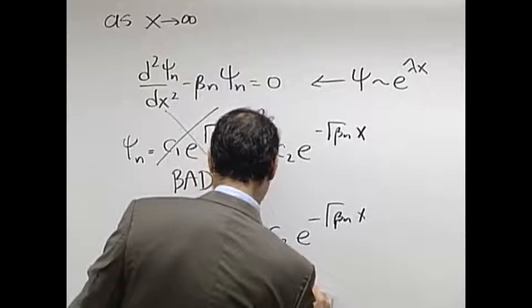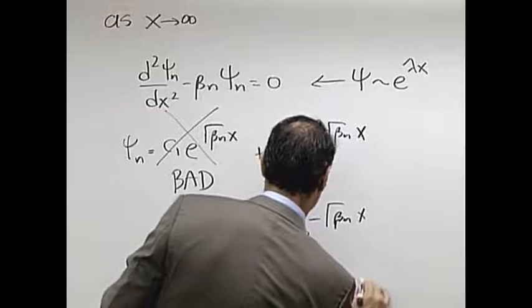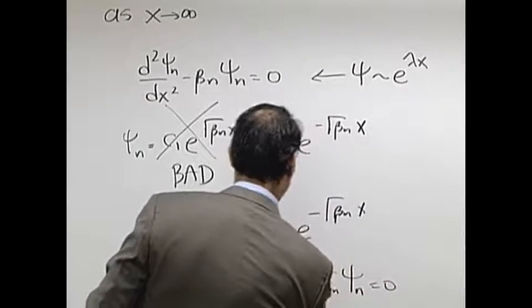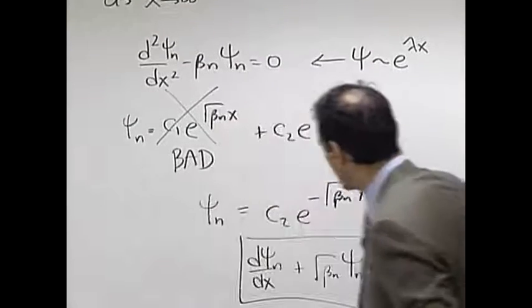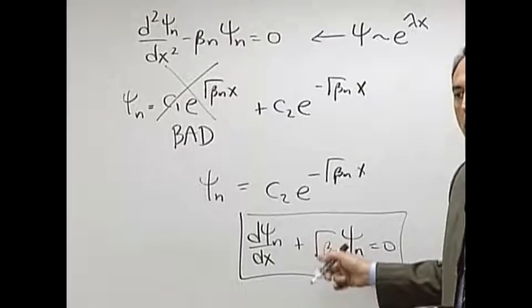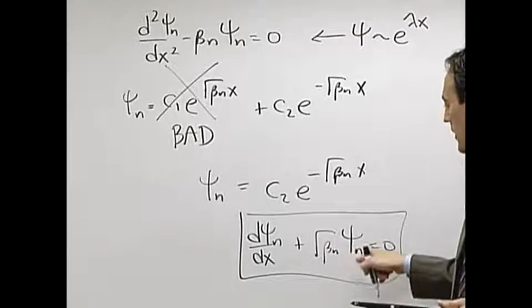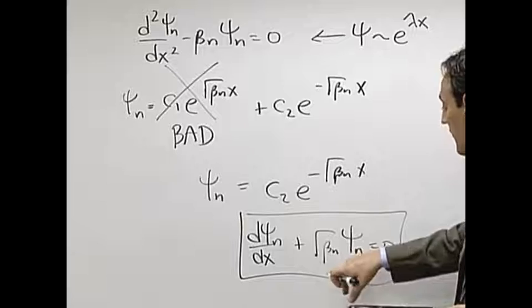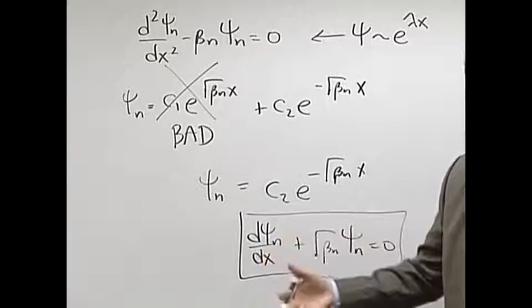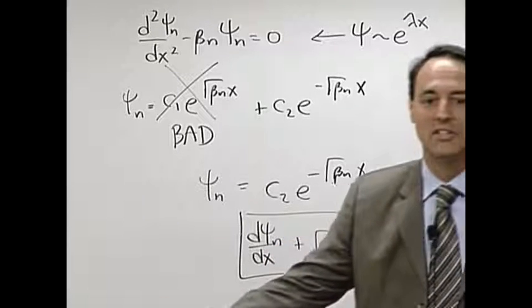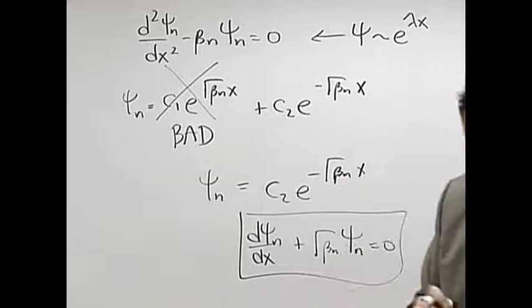D dx plus square root beta n, psi of n is equal to zero. The most important thing to observe about this is that there's now a relationship between, as I go to infinity, between the function and its derivative. This is going to be my boundary condition. Okay?